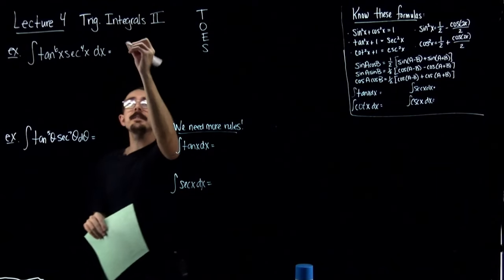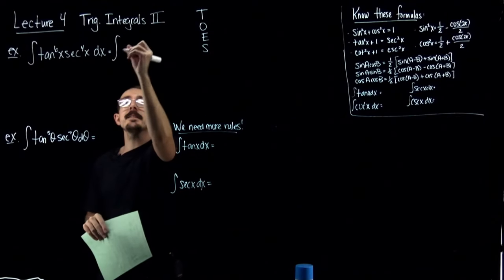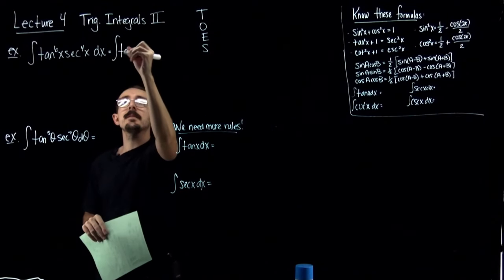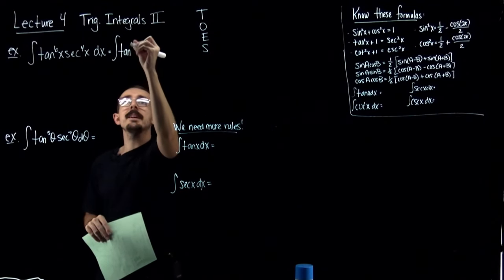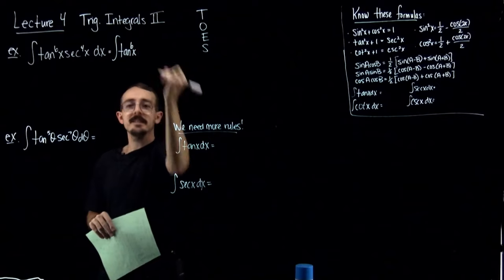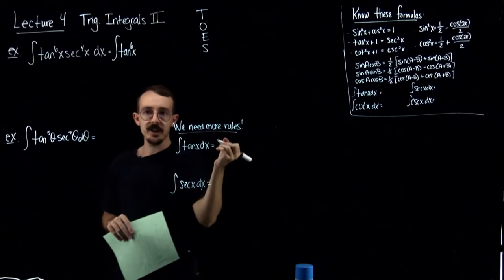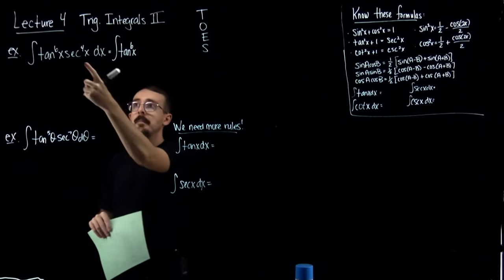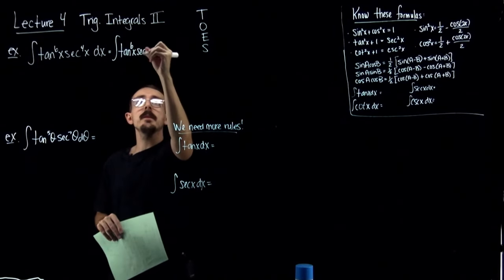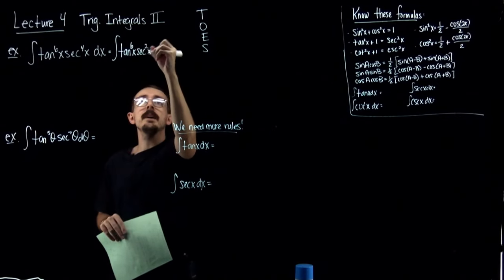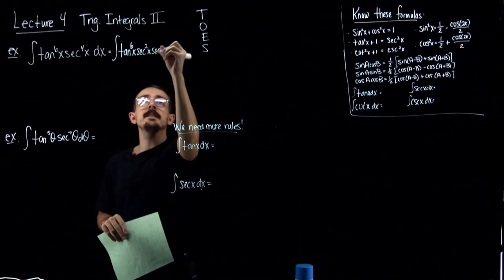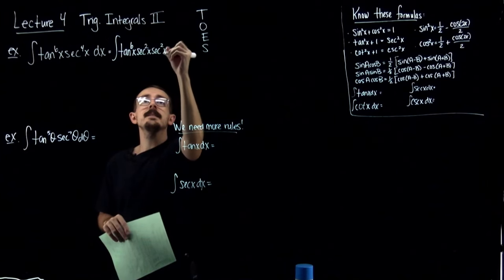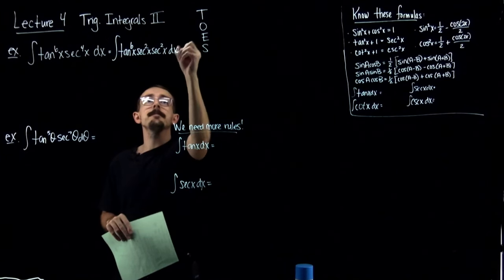My first thought is to take this integral and rewrite it. I'm going to keep tangent to the 6th, and this secant to the 4th I could split into secant squared times secant squared.